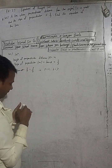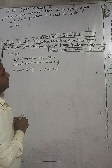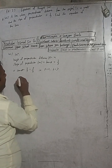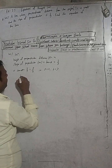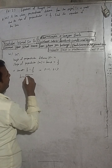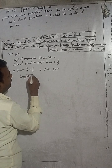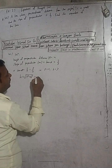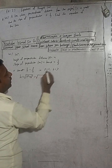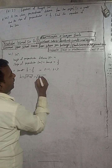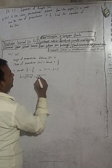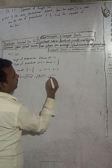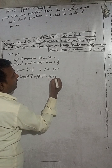We will use the Pythagoras theorem to find the hypotenuse. So H is equal to — the hypotenuse formula is root under P-squared plus base-squared. So H equals root of 2-squared plus 3-squared, which is root of 4 plus 9.